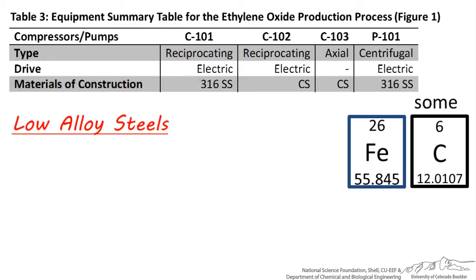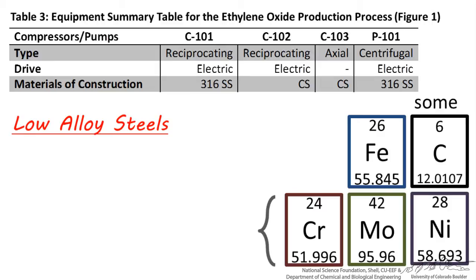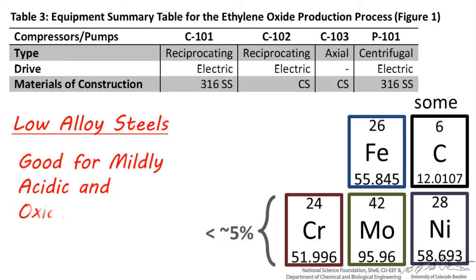Low alloy steels are a little stronger than carbon steel because they usually incorporate chromium, molybdenum, and nickel, among other metals and nonmetals, at levels of less than 5%, which means these materials can be exposed to mildly acidic and mildly oxidizing chemicals.